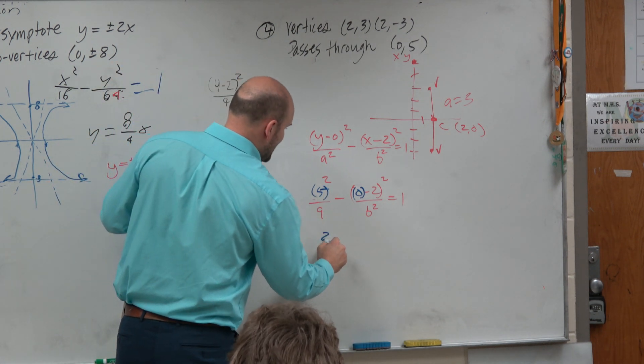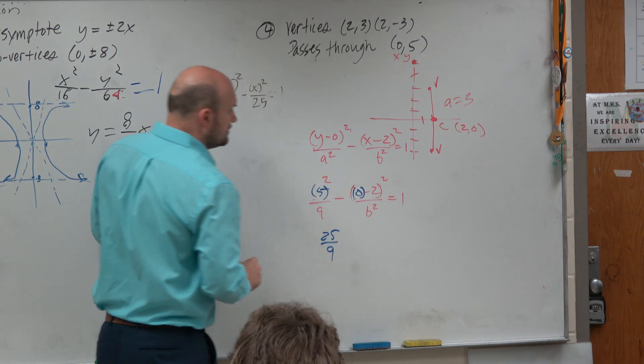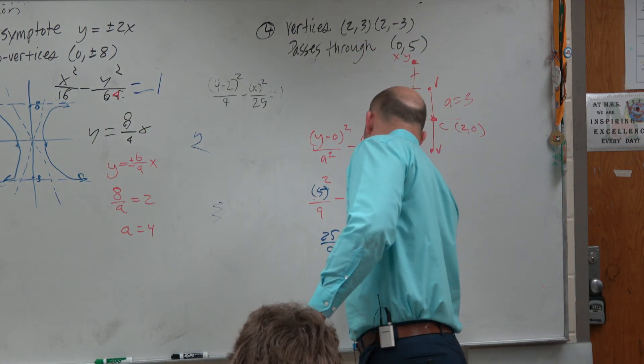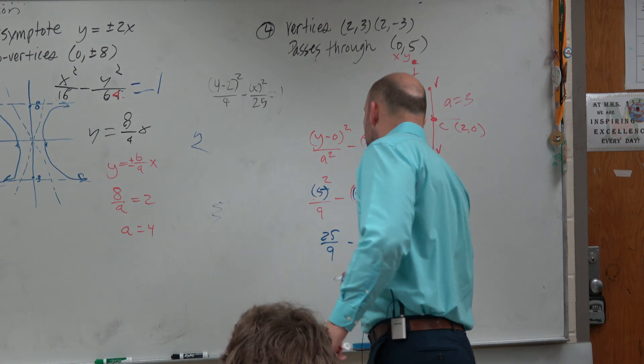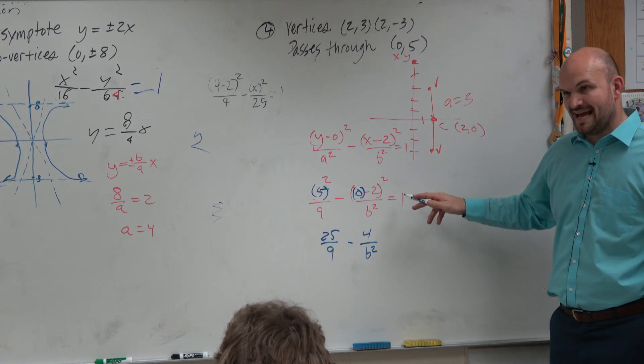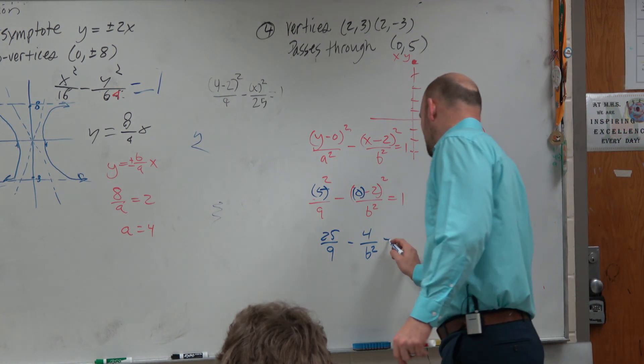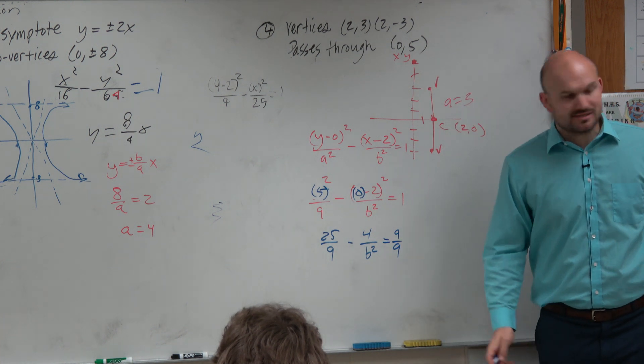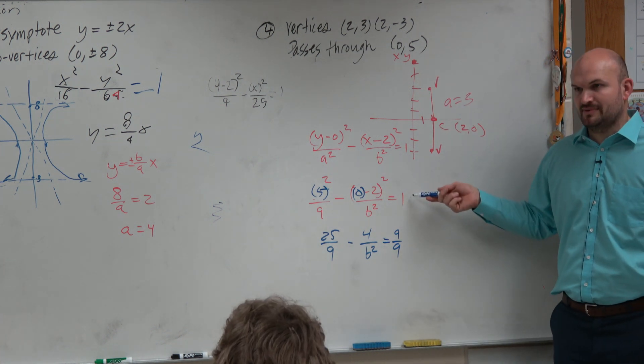So 5 squared is 25 over 9. 0 minus 2 is negative 2. Negative 2 squared is 4. Now, this doesn't look like it's going to be very fun, is it? So let's rewrite our 1 as 9 over 9. I kind of know what to expect, so that's why I'm doing this. And hopefully, you guys realize that 9 over 9 is the same thing as 1.